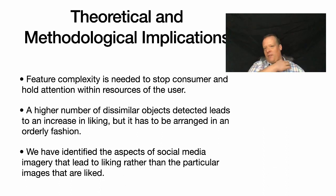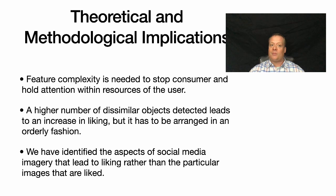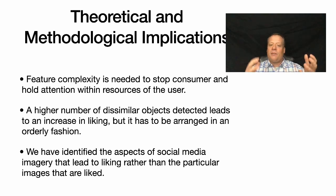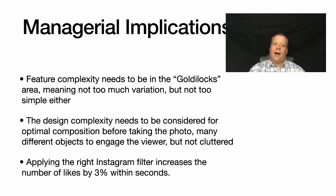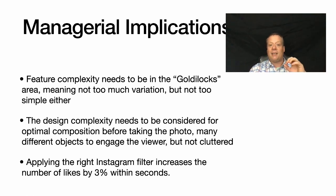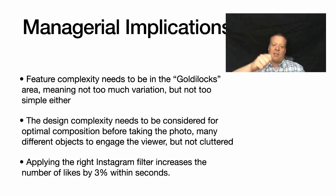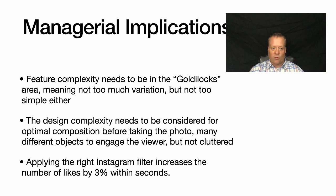The implications: feature complexity is needed to stop the consumer and hold their attention, but a high number of dissimilar objects needs to be arranged in an orderly fashion — cluttered arrangements cause people to move on and not like the image. Feature complexity needs to be in a goldilocks zone: not too much variation, but not too simple either. Design complexity must be considered when composing the photo — whether arranging objects or choosing the best angle — and applying the right Instagram filter increases likes by about 3% in seconds.